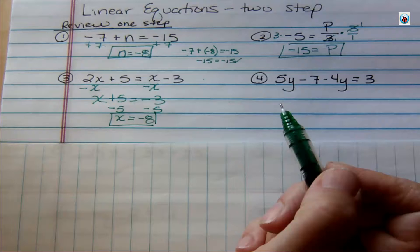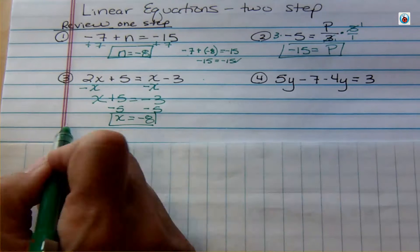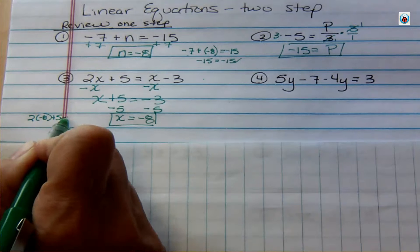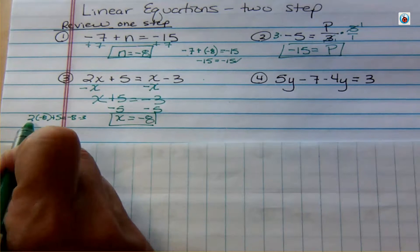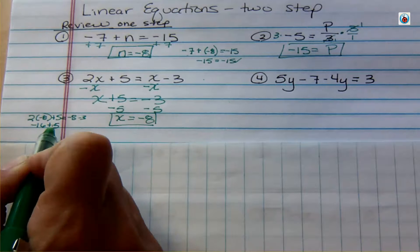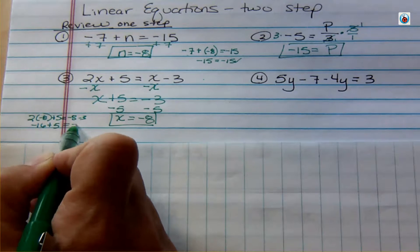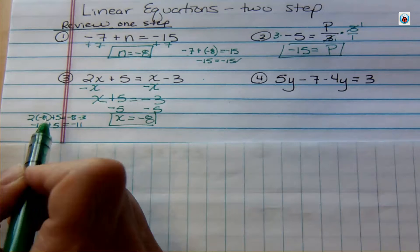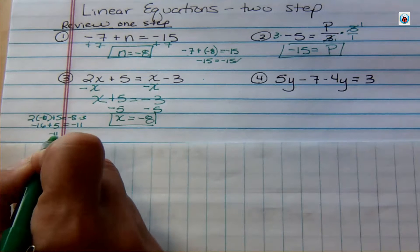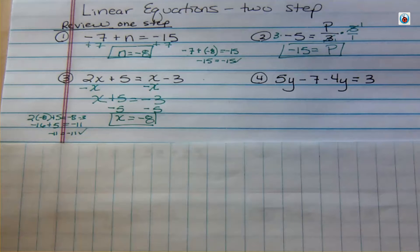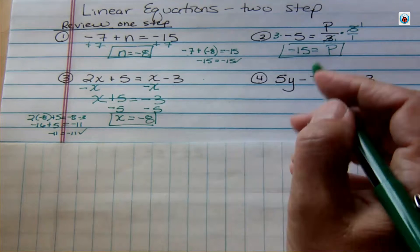The answer is negative 8. Let's check: 2 times negative 8 plus 5 should equal negative 8 minus 3. That's negative 16 plus 5 on the left and negative 11 on the right — there are more negatives by 11, so negative 11 equals negative 11. It checks out. Always check your equations when you're not sure, especially when you're just starting out.